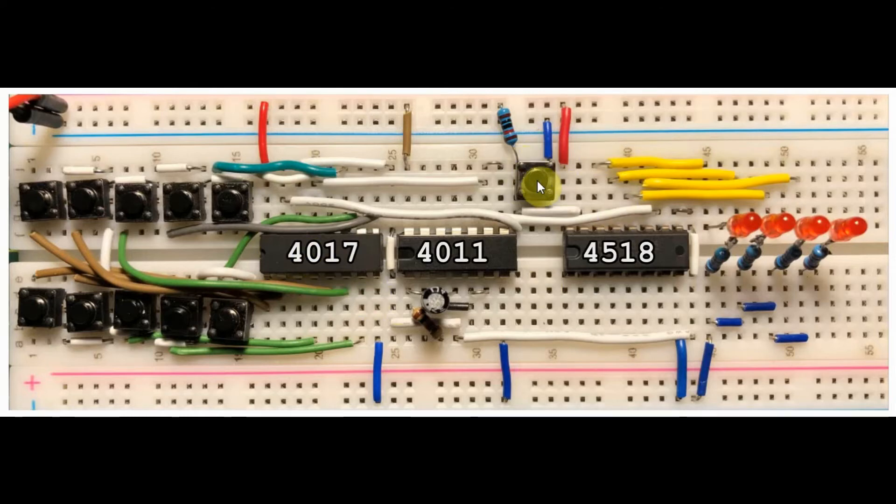This switch here is used to enable clocks in both the 4017 and the 4518 counter. And at the output of the 4518 counter we have four LEDs, which will display the Binary Coded Decimal value.